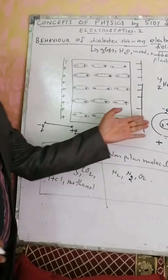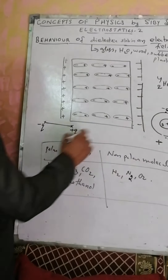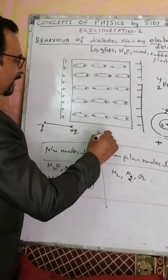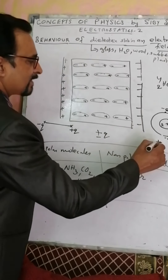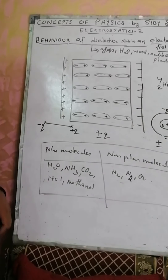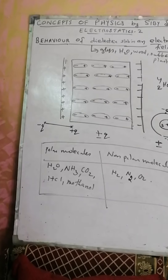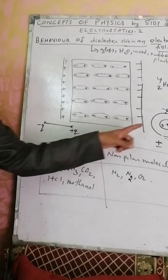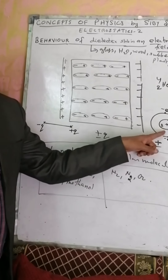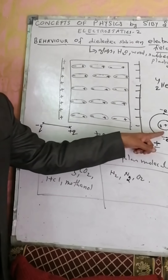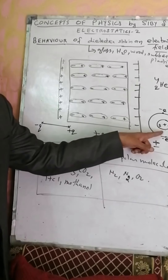Is it a dipole? Plus Q and minus Q located at the same point — is that a dipole? No, that is not a dipole. So this atom is not behaving like a dipole.